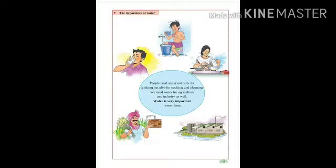Therefore, we can see how not only human beings but also plants and animals require water. The earth depends on water to function. People need water not only for drinking but also for cooking and cleaning. We need water for agriculture and industries as well. Water is very important in our life.